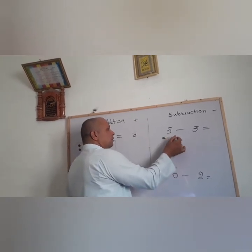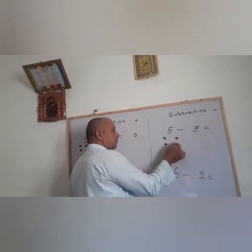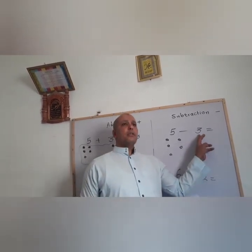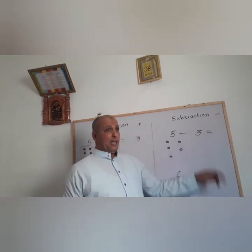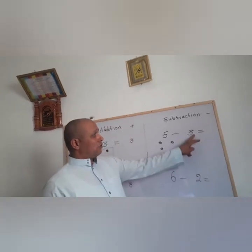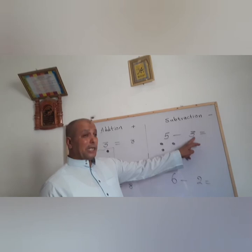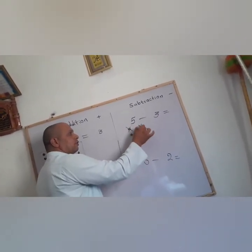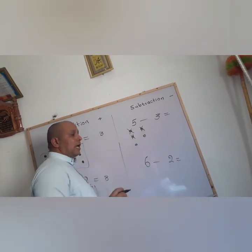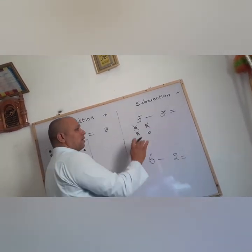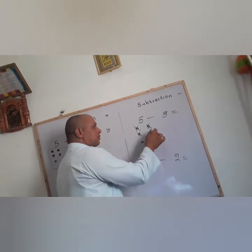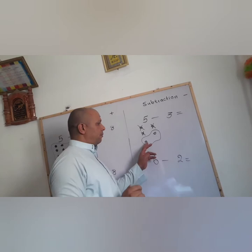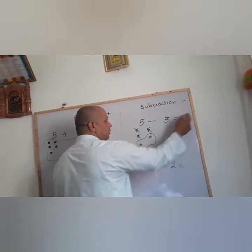So place counters: 1, 2, 3, 4, 5. And for the second number, you need to put X signs on the counters. We need to make 3 X signs here on the counters: 1, 2, and 3. Then put the remaining counters together and count them: 1, 2. So your answer will be 2.